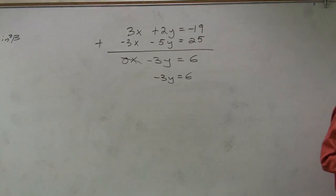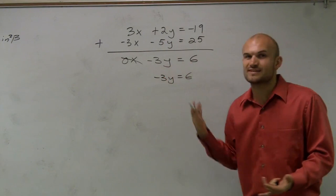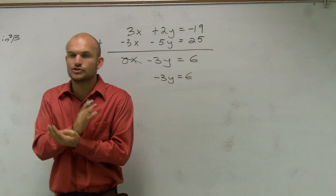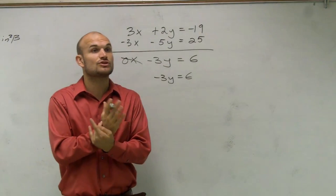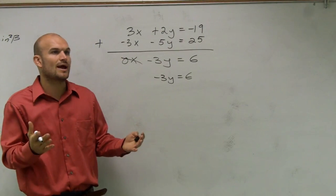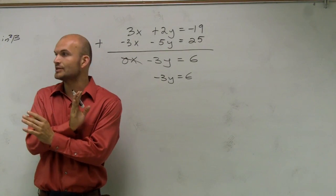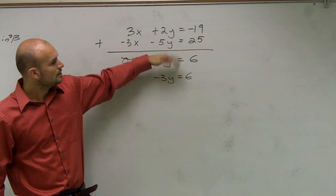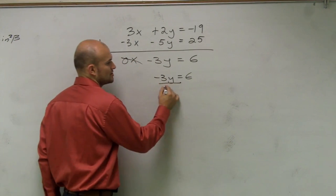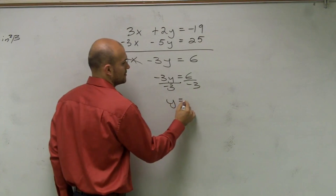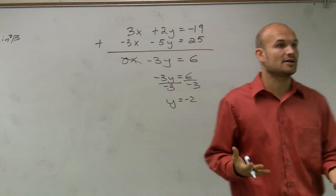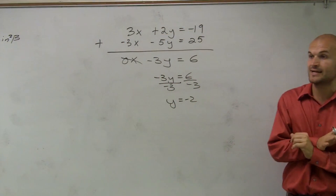Remember what we're talking about with systems — find the solution of the system means where our two equations are going to share a point, where the two lines intersected on a graph. So here I just need to solve for y. Divide by negative 3 on both sides. I get y equals negative 2. So the y coordinate of where these two lines intersect is negative 2.